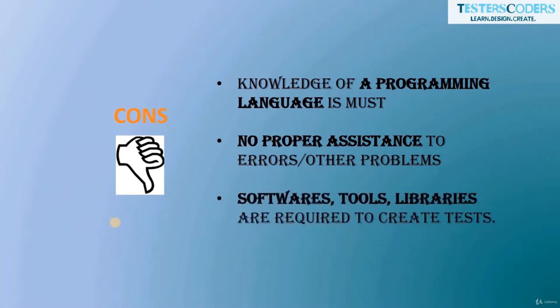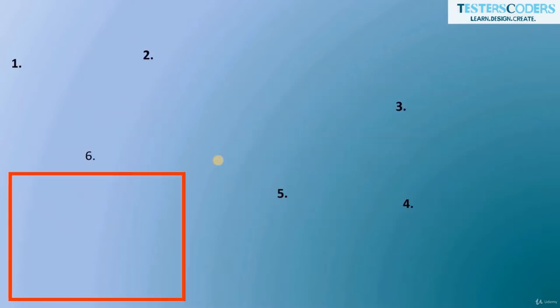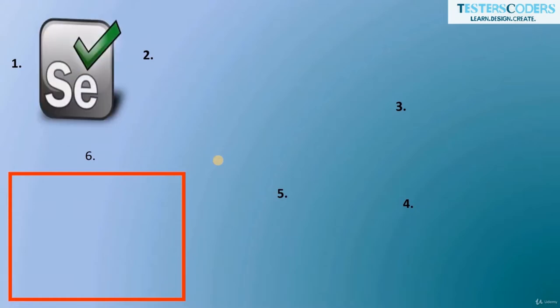Software tools and libraries are required to create tests. These are the pros and cons of automation testing. Let us quickly get an overview of the software tools and libraries used for framework and automation project creation. Selenium is the open source free tool that helps us create code for interaction with a website.